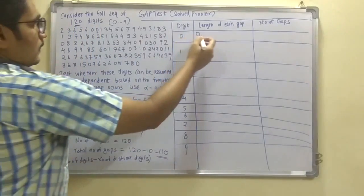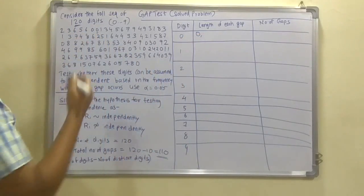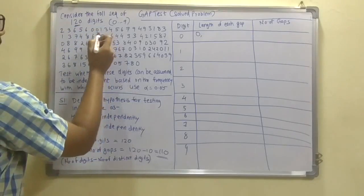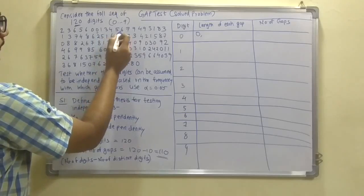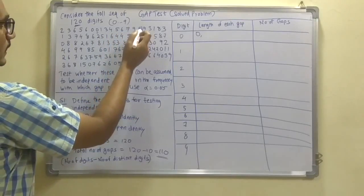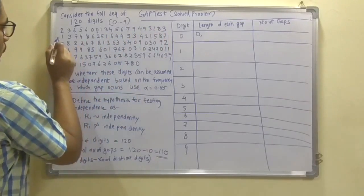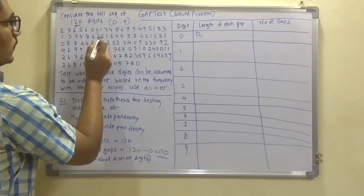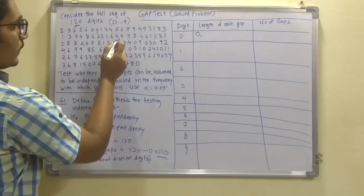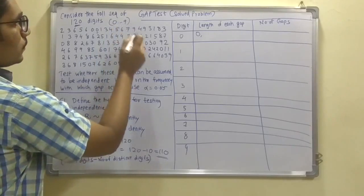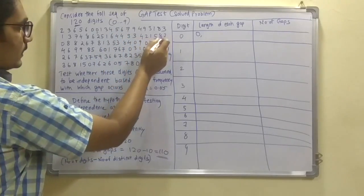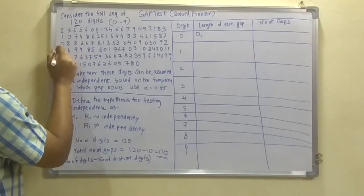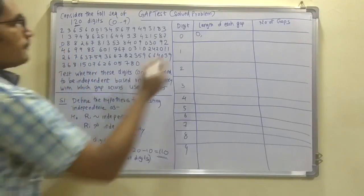From the next 0, counting digits until the following 0 appears gives a gap of 33. So after 33 digits you encounter the next 0.